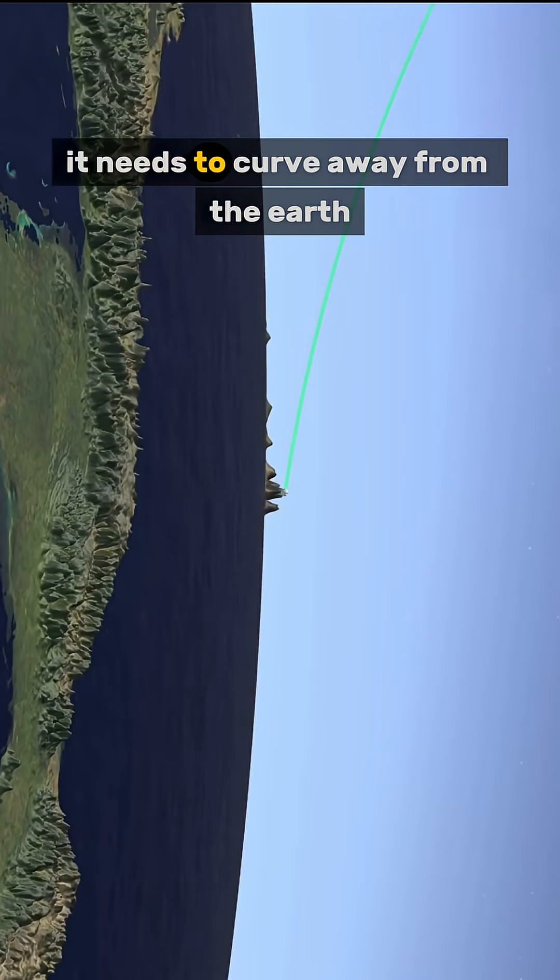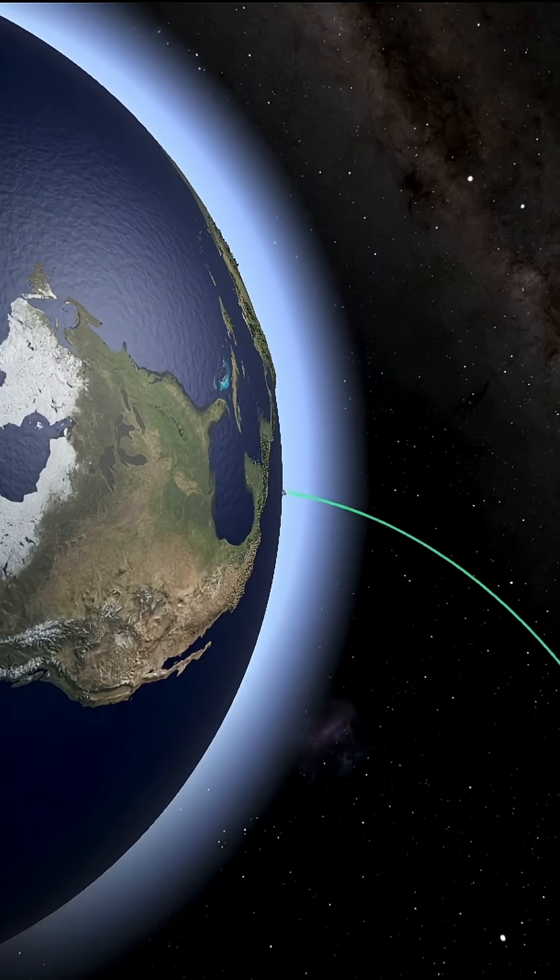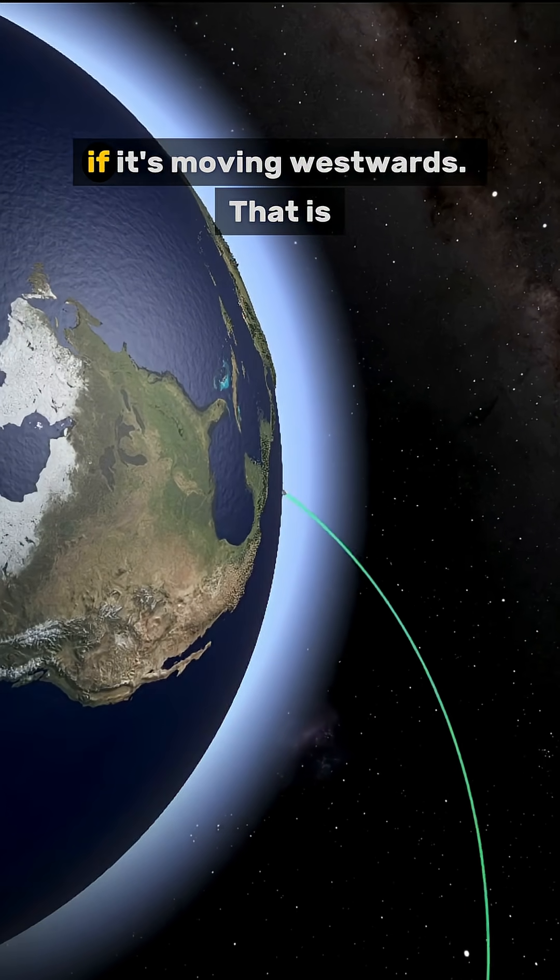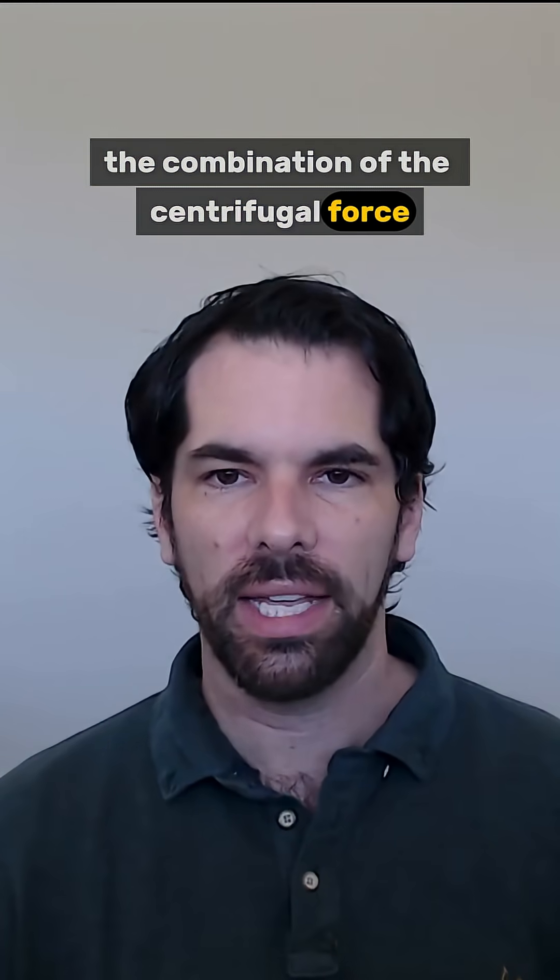It needs to curve away from the Earth if it's moving eastwards, and it needs to curve towards the Earth if it's moving westwards. That is the combination of the centrifugal force and the Coriolis force.